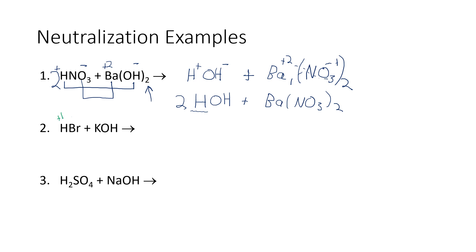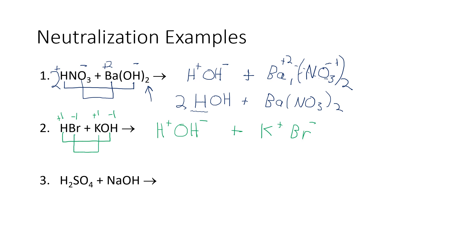For the second example, HBr (hydrobromic acid) reacts with potassium hydroxide. Hydrogen is +1, bromide is a halogen so it's -1, potassium is an alkali metal so it's +1, and hydroxide is -1. Swapping partners: hydrogen pairs with hydroxide to give HOH, and potassium pairs with bromide to give KBr — a +1 and -1 that cancel out. Looking closely, we have one of each ion, so this equation is balanced as written.